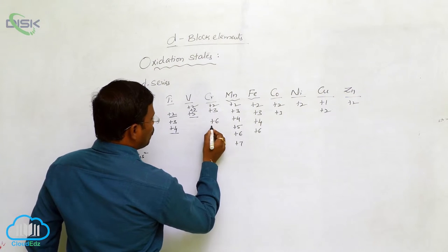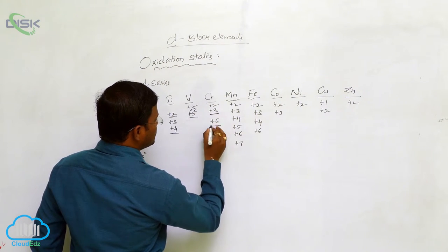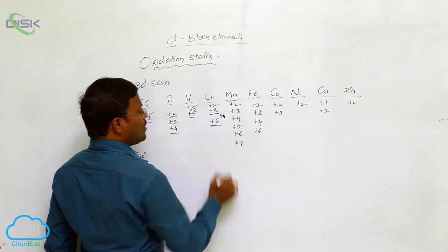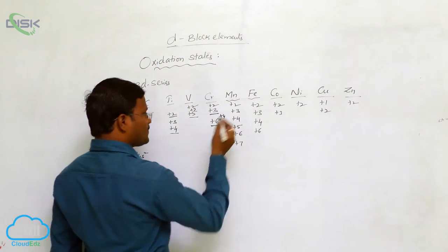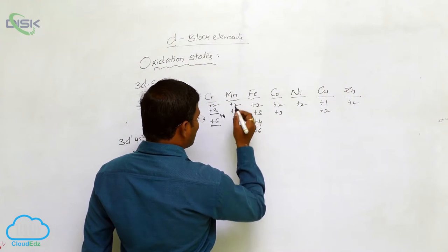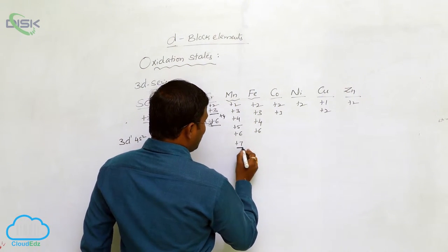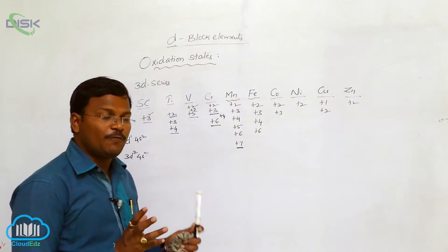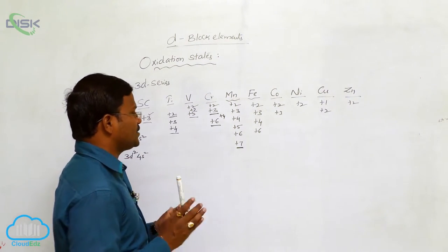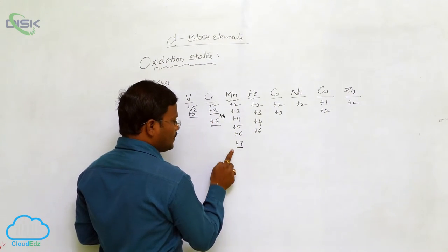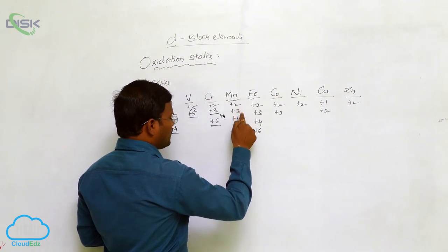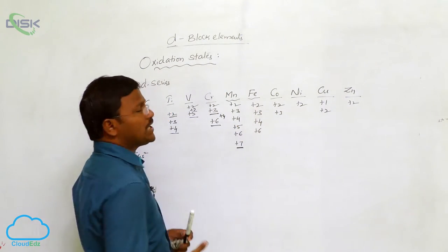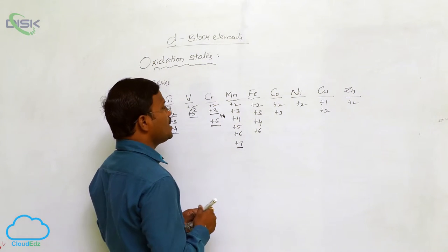Similarly, vanadium shows plus 5. For chromium, the generally identified oxidation states are plus 3 and plus 6, with plus 4 and plus 5 also possible. Manganese is a special category — the only d-block element that can exhibit such a high variety of oxidation states, starting with plus 2 and ending with plus 7: plus 2, plus 3, plus 4, plus 5, plus 6, and plus 7.